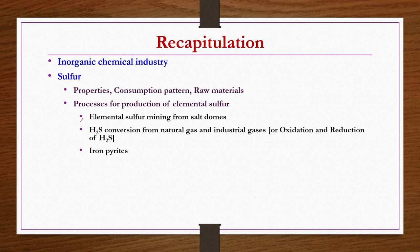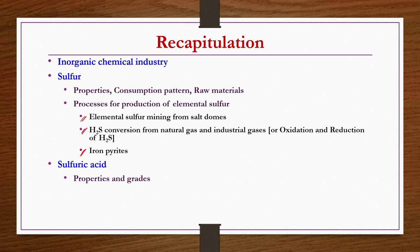All three processes were discussed with possible raw materials, chemical reactions, quantitative requirements, flow sheets, process descriptions, and major engineering problems. Then we started discussing sulphuric acid — its properties and grades — followed by types of production methods. Two types are available: the conventional older chamber process and the modern contact process.